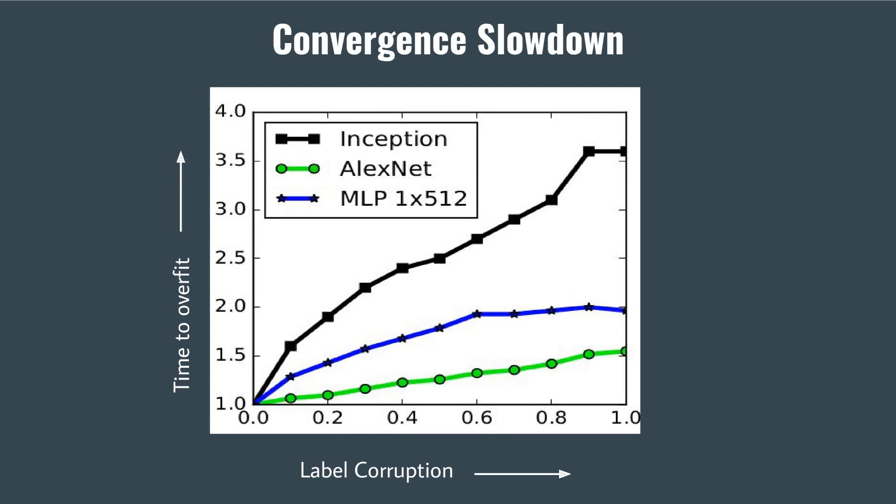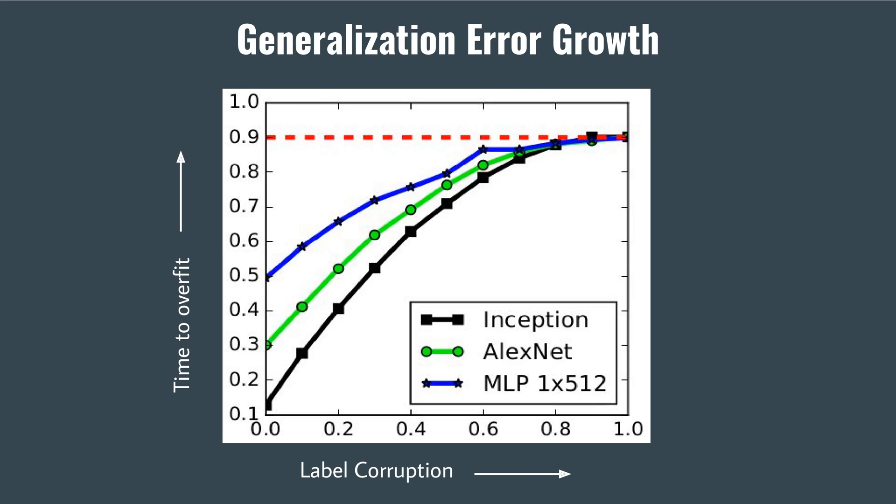Label corruption was done by varying the degree of randomization from no-noise signals to full-noise signals. A significant slowdown was expected but not observed through the experiment. The test error, or generalization error, converges to 90% when the label corruption approaches one.